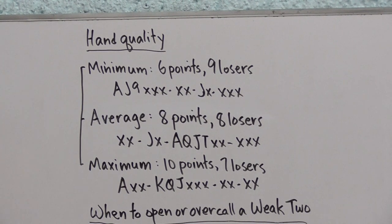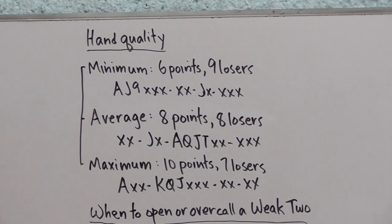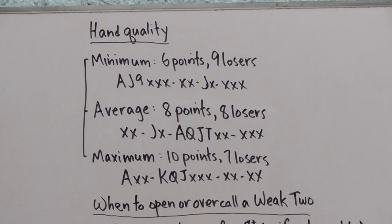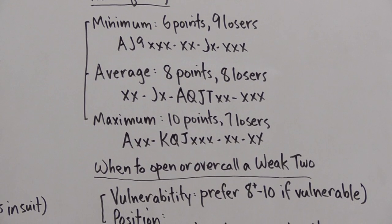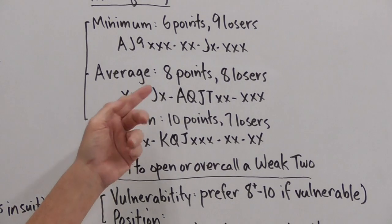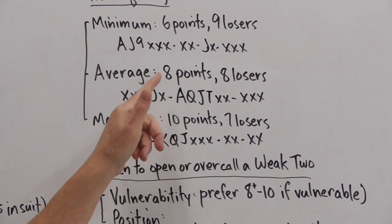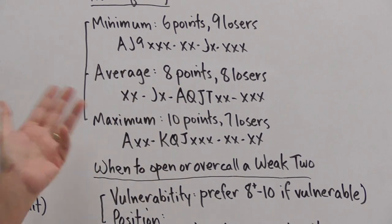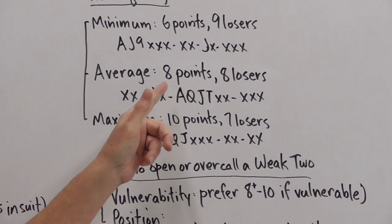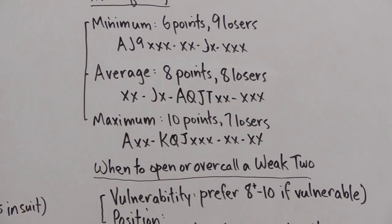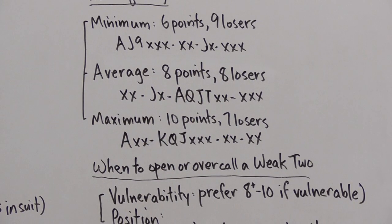The average weak two opening bid will be about eight points and eight losers and this would be a typical hand that would fit into that category. We might open this hand two diamonds. We've got eight points and eight losers. Okay, average weak two opening bid.